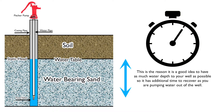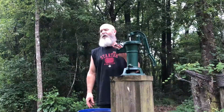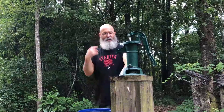This is the reason it's a good idea to have your well as deep as you can — you have as much water in your casing pipe, so it has additional time to recover as you're pumping water out. Now I'll discuss how to go about getting those measurements so you can find what your flow rate is. Somebody asked me if I could tell them how to check the flow rate or replenishment rate of one of these shallow wells.